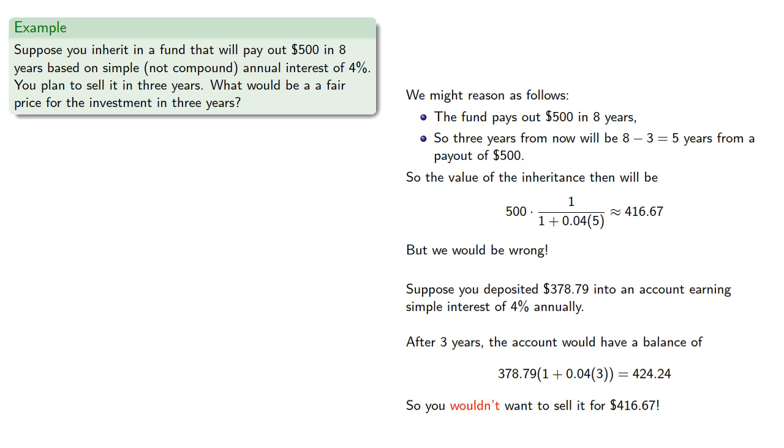Instead, the correct computation of the value in three years will be the present value of the account, that's 500 times this reciprocal of the accumulation function, times the accumulation function evaluated after three years. So a fair price in three years would be $424.24.